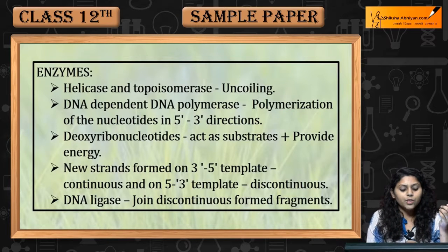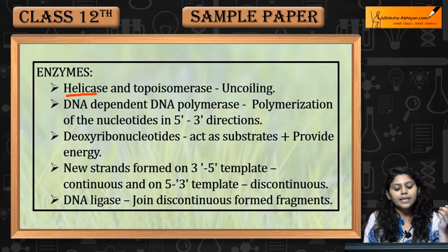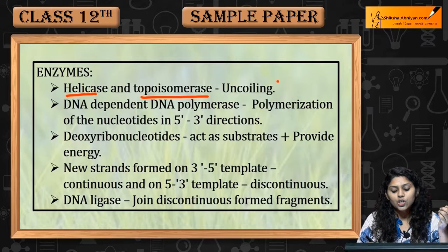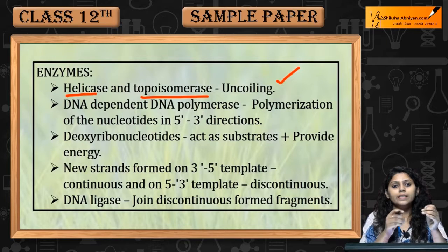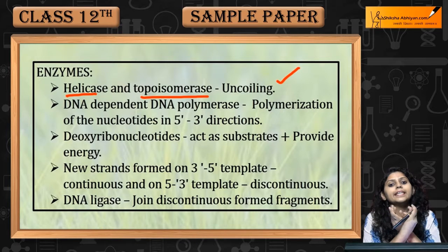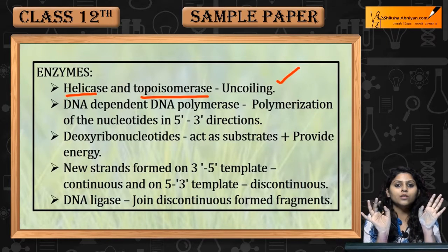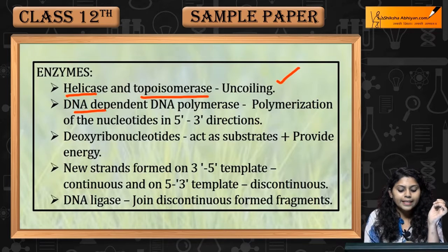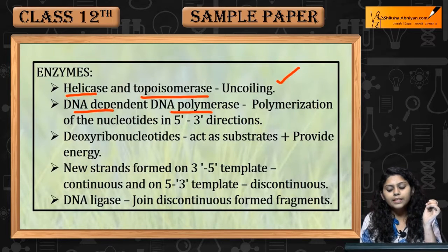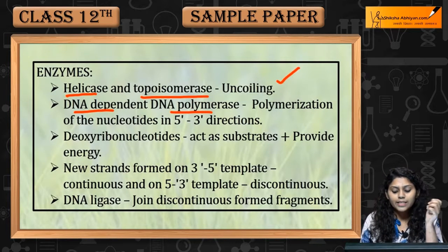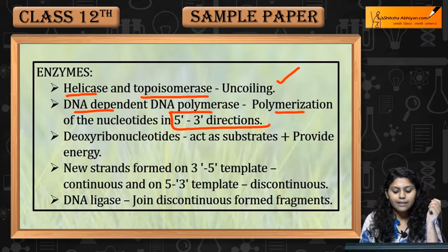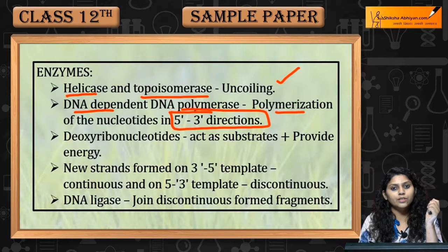The enzymes responsible are helicase and topoisomerase, which cause uncoiling — the DNA is coiled and they uncoil and open it. DNA-dependent DNA polymerase causes polymerization of nucleotides in the 5-to-3-end direction.